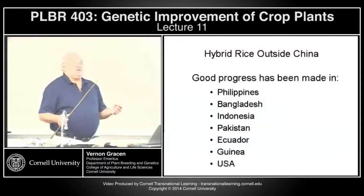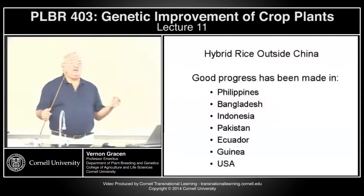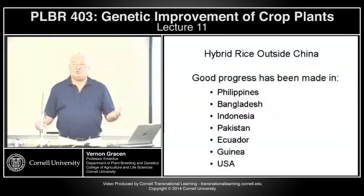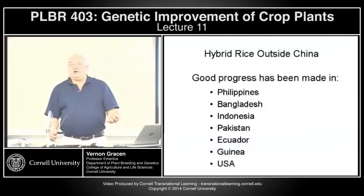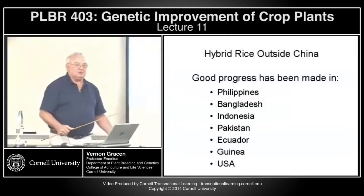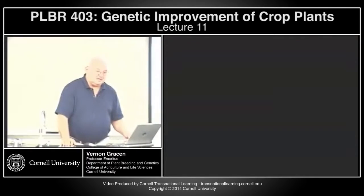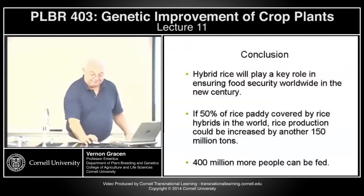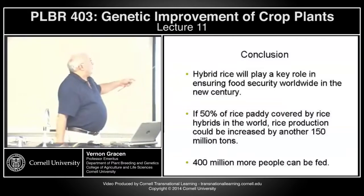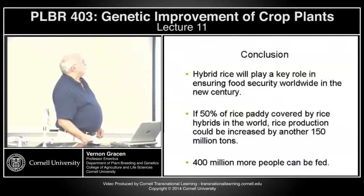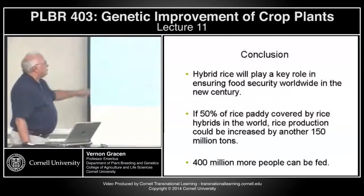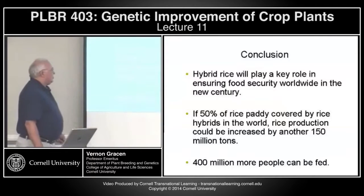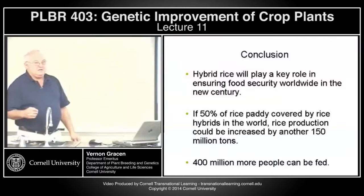Originally, hybrid rice economically worked in China because the Chinese government mandated self-sufficiency in rice and said we will produce hybrid rice to increase yields. But now hybrid rice is taking off in the Philippines, Bangladesh, Indonesia, Pakistan, Ecuador, Guinea, and the U.S. Dr. Yan concludes hybrid rice will play a key role in food security worldwide. If 50% of paddy rice grown today was covered by hybrids, rice production could increase by 150 million tons and 400 million people could be fed.